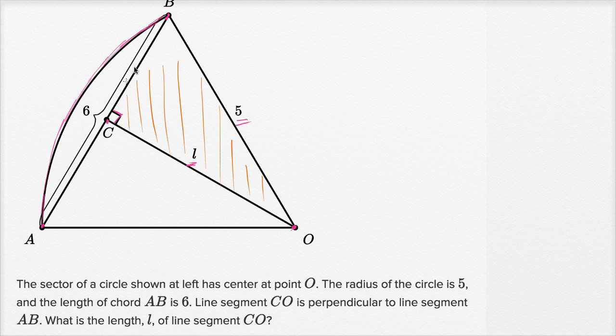So let's see, if we knew what CB was, if we knew the length of segment CB. The Pythagorean Theorem would tell us that the length of segment CB squared plus L squared, plus L squared,